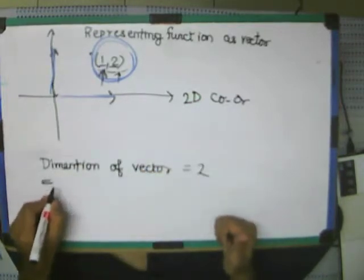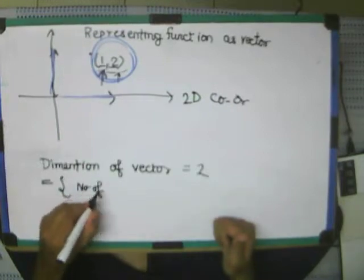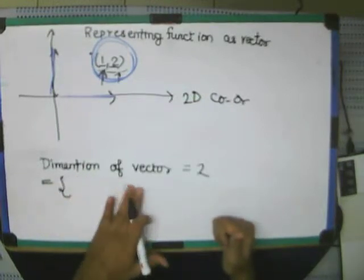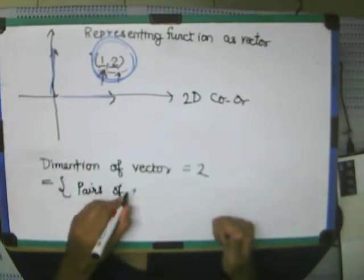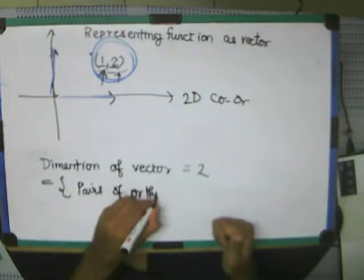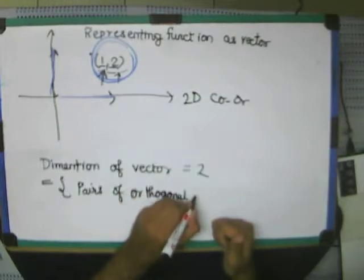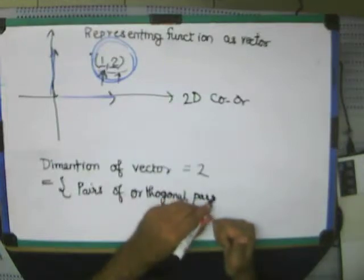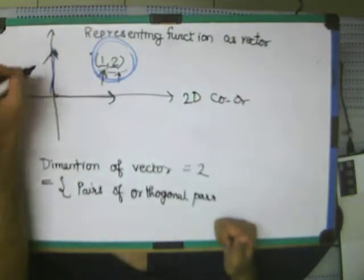Or in other words, the dimension I can represent in forms of number of orthogonal vectors or the pairs in which I can represent it. I can represent it in always form of two orthogonal pairs, not never more than that.